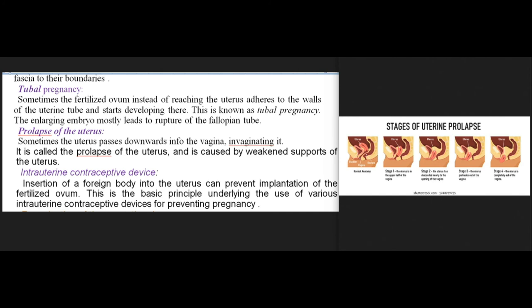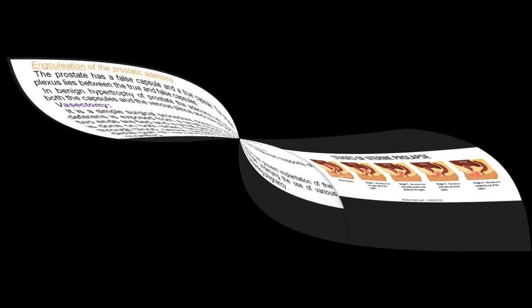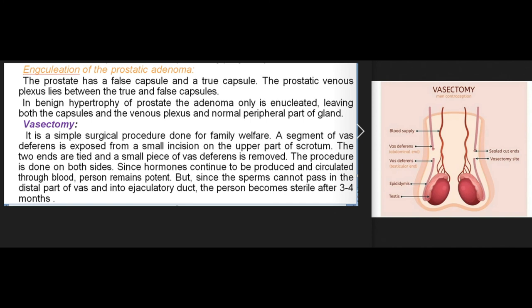Intrauterine contraceptive device: insertion of a foreign body into the uterus can prevent implantation of the fertilized ovum — this is the basic principle underlying IUCDs for preventing pregnancy. Enucleation of prostatic adenoma: the prostate has a false capsule and a true capsule; the prostatic venous plexus lies between them. In benign hypertrophy, only the adenoma is enucleated, leaving both capsules, the venous plexus, and the normal peripheral part of the gland. Vasectomy: a segment of vas deferens is exposed through a small incision on the upper scrotum; the two ends are tied and a small piece of vas deferens is removed, done on both sides. Since hormones continue circulating through blood the person remains potent, but since sperms cannot pass into the ejaculatory duct the person becomes sterile after three to four months.